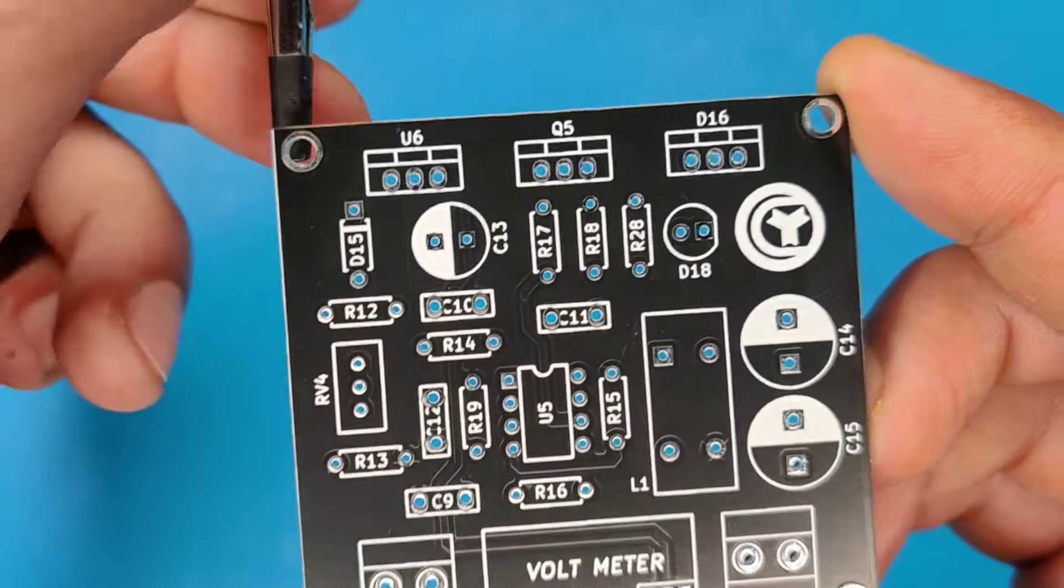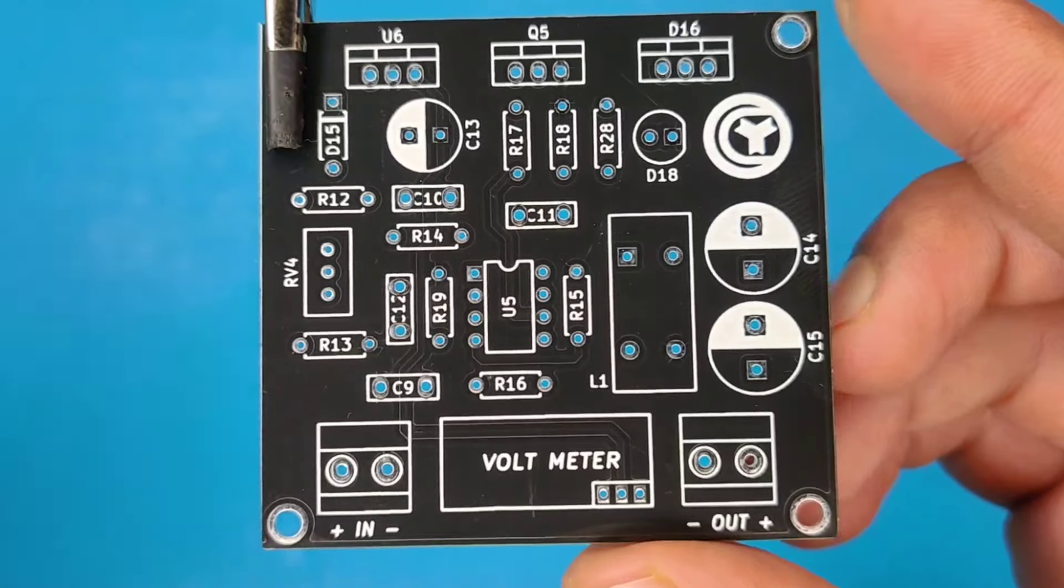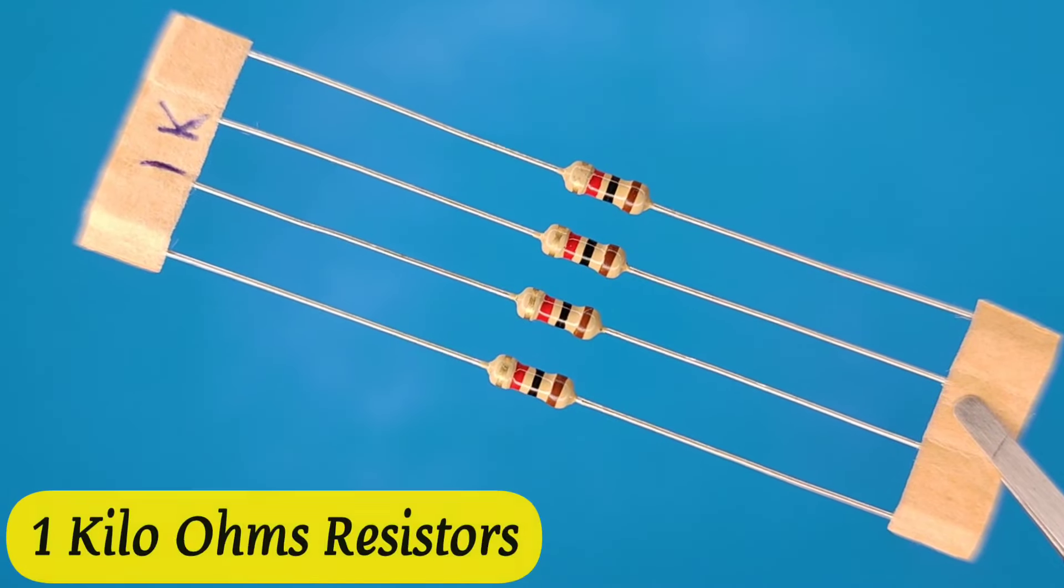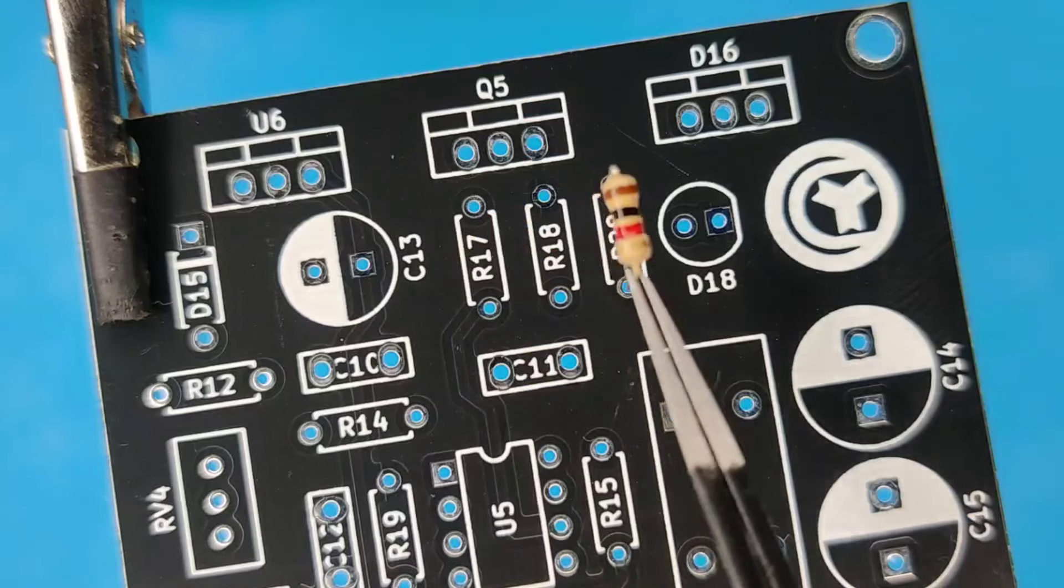And now it is time to assemble the PCB. Let's place all the components on the PCB according to the circuit diagram.